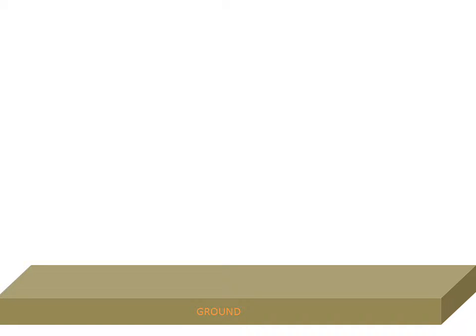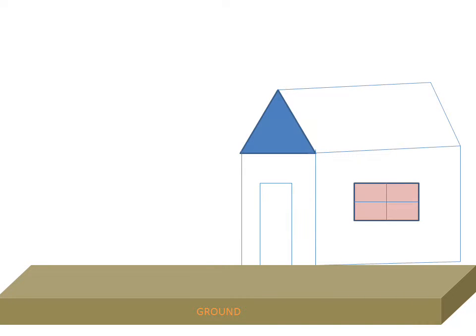Today we will discuss how buildings are prevented from lightning. We have a ground on which we have a house, and we want to prevent this house from the lightning of the clouds. What is the procedure we have?